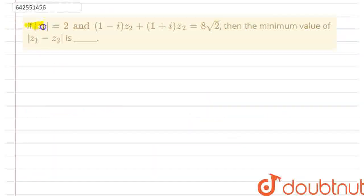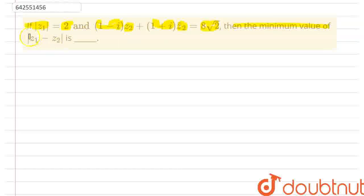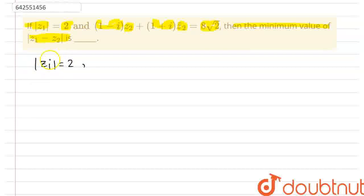In this question, we are given that modulus of z1 equals 2 and (1 minus i) into z2 plus (1 plus i) into z2-bar equals 8√2. We need to find the minimum value of modulus of z1 minus z2. Since modulus of z1 equals 2, z1 lies on a circle with center (0, 0) and radius 2. The equation of that circle is x² + y² = 4.